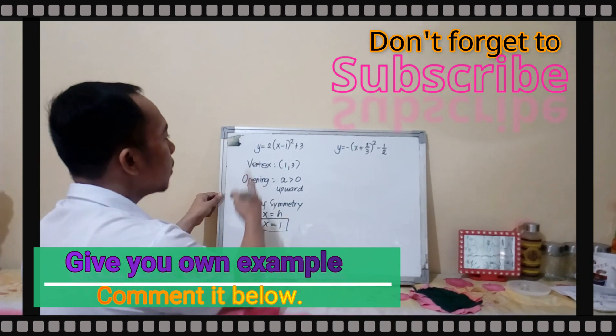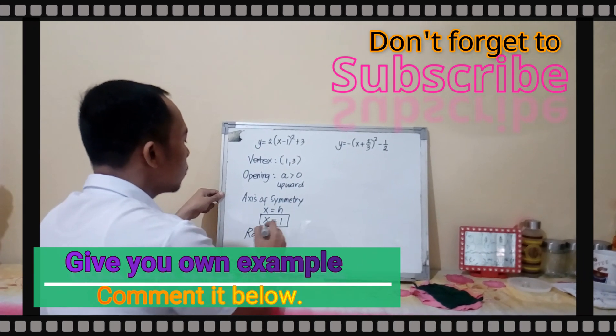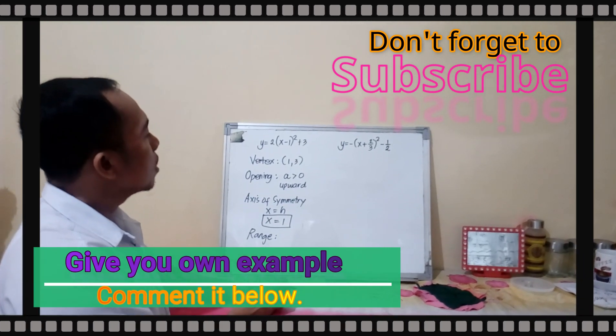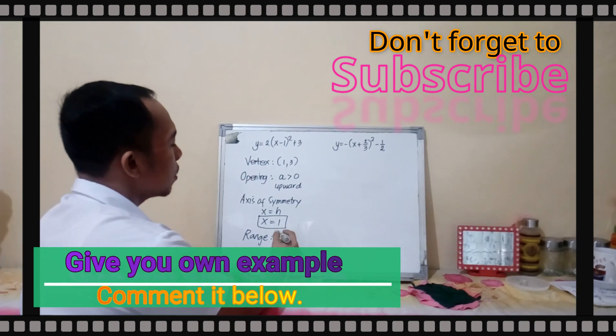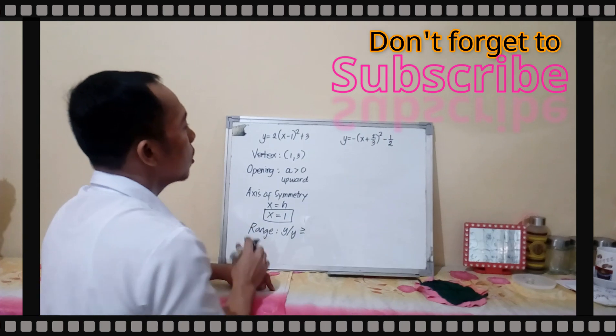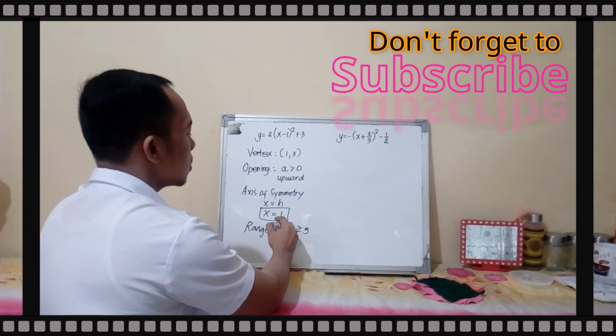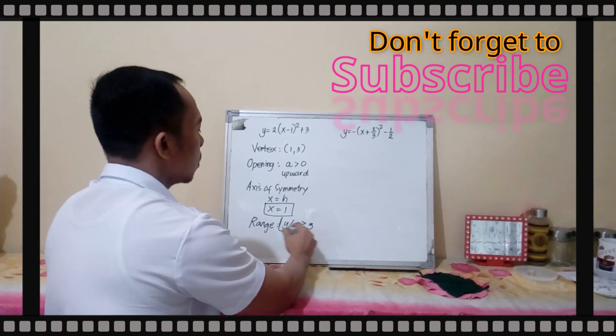And then, you can also get the range here from the vertex form. What is your range? Since it opens upward, your range is y such that y is greater than or equal to your k, which is 3. This is now your range.